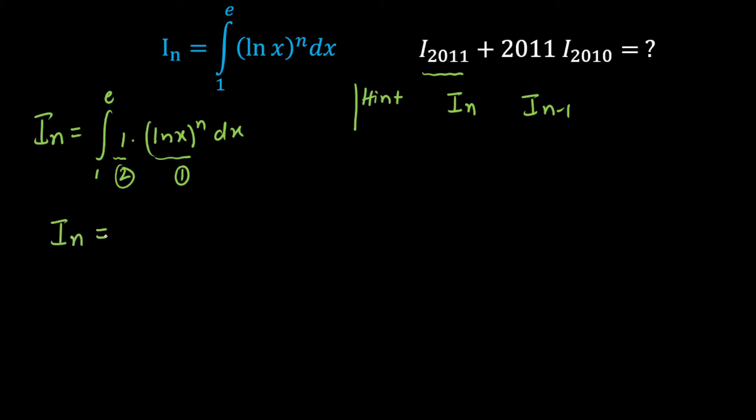So I of n will be equal to first function as it is into integration of second, the limits will be 1 to e, minus times integration of differentiation of first function. So when you differentiate this here, ln of x whole raised to power n, you will get minus times n here, ln of x whole raised to power n minus 1. Now differentiation of inside function will be 1 by x. Now integration of second function will give you x here, d of x. Limits will be 1 to e.